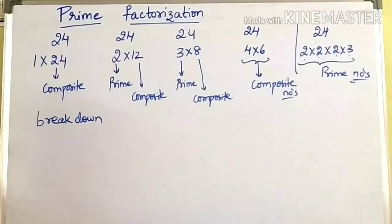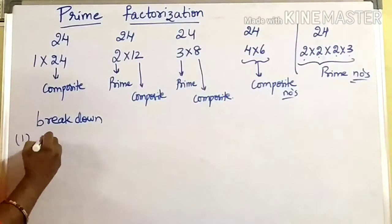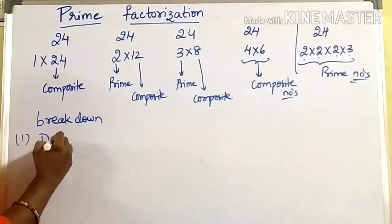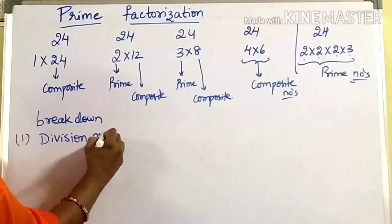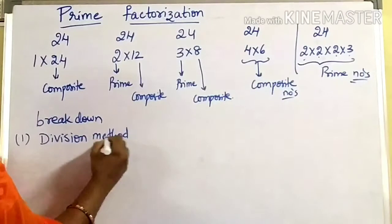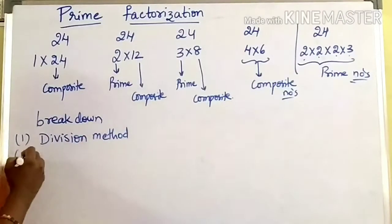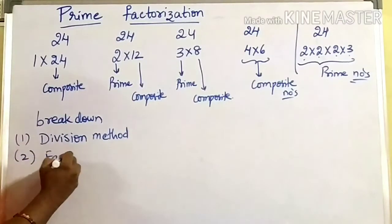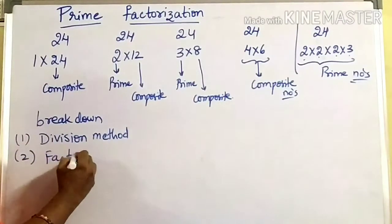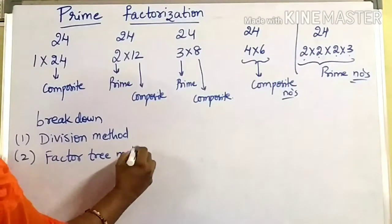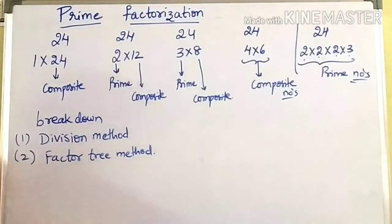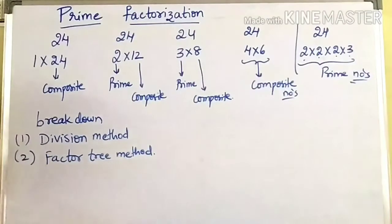There are two methods of prime factorization, children. The first one is the division method, and the second method is the factor tree method. Now I am going to discuss both methods — the division method and the factor tree method.